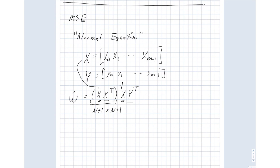So the normal equation is quite useful, but it does require this matrix inverse that may not always be possible. In those situations, what we will do is drop back to a method we've already talked about: gradient descent. The gradient descent approach is we randomly guess what our W vector ought to be, then compute our error, compute the local gradient, and take a small step that reduces our error.